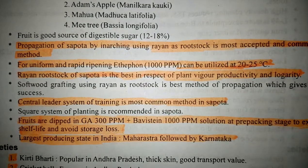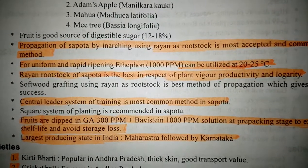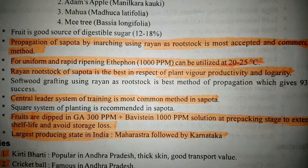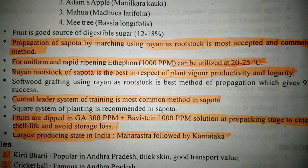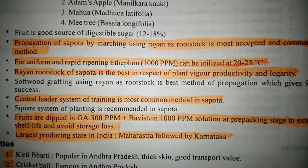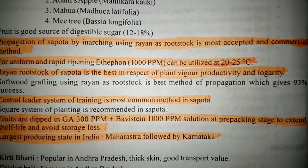Central leader system of training is the most common method in Sapota. Roots are dipped in GA 300 ppm plus carbendazim 1000 ppm solution at 3 packing stages to extend shelf life and avoid storage loss.